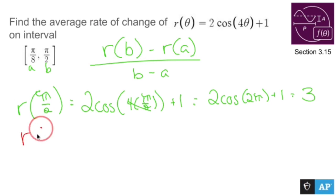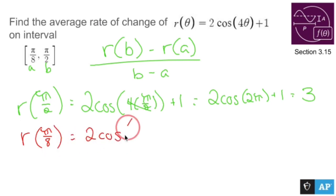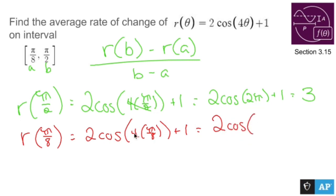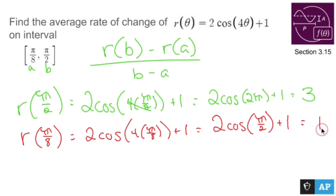To find r of a, I compute r of pi over 8: 2 times cosine of 4 times pi over 8, plus 1. That becomes 2 times cosine of pi over 2, plus 1. The cosine of pi over 2 is 0, so this becomes 0 plus 1, which is 1. So r of pi over 8 equals 1.